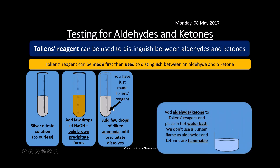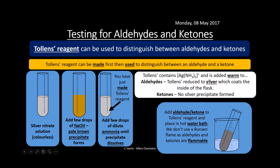Once you've got your Tollens' reagent, you add an aldehyde or a ketone to it and place it in a hot water bath — we don't use a Bunsen because aldehydes and ketones are flammable. If you have an aldehyde, you get a silver precipitate that coats the inside of the flask because it reduces the silver nitrate in the Tollens' reagent. If you have a ketone, no silver precipitate is formed. This allows you to distinguish between an aldehyde and a ketone.